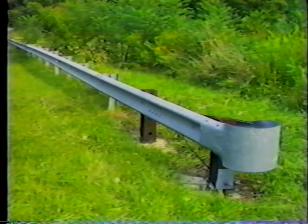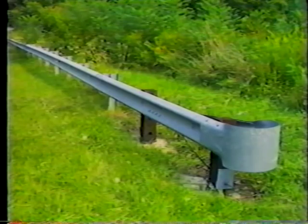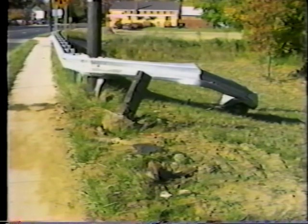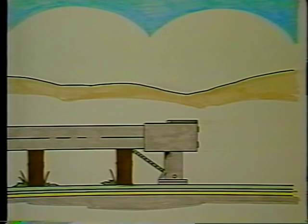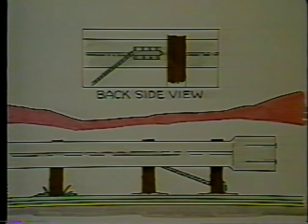The breakaway cable terminal (BCT) end treatment is designed to work with W-beam barrier systems, but can be transitioned to work with thrie-beam through a commercially available transition piece. The BCT is designed to break away at the first two posts and allow the vehicle to accordion the W-beam and pass safely behind it. After being hit downstream from the terminal, rail strength is maintained by tension in the cable.